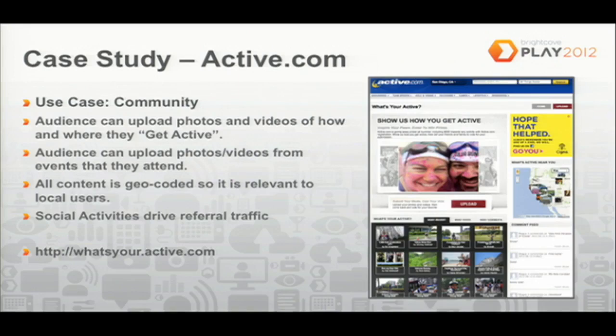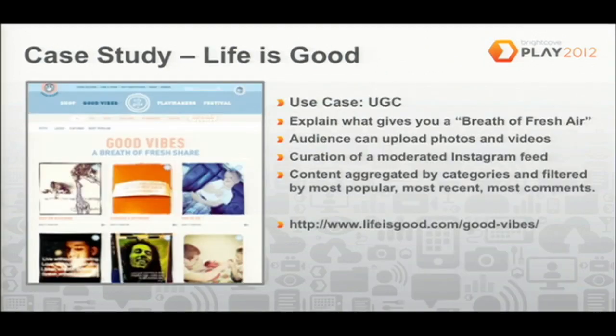Active.com is a popular sporting site using their community to show what people do to be active — all the different ways people move and do activities outdoors or indoors. They submit photos and videos into the active community, all geotagged, so you can see content geographically relevant to you. This is done through a Facebook login, so content is being posted to Facebook and driving referral traffic. Life is Good, a Boston-based company, asks their audience to submit content around 'good vibes,' pulling in and moderating Instagram feeds while also allowing direct photo and video uploads.